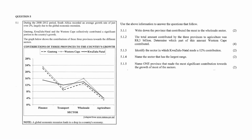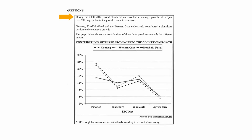Question 5.1 consists of 4 data handling questions and 1 finance question designed to assess your understanding of line graphs and statistics. During 2008 to 2012, South Africa recorded an average growth rate of just over 2%, largely due to the global economic recession. Gauteng, KwaZulu-Natal, and the Western Cape collectively contributed to a significant portion of the country's growth across four sectors: finance, transport, wholesale, and agriculture. Gauteng is the dashed line, Western Cape the dotted line, and KwaZulu-Natal the solid line.